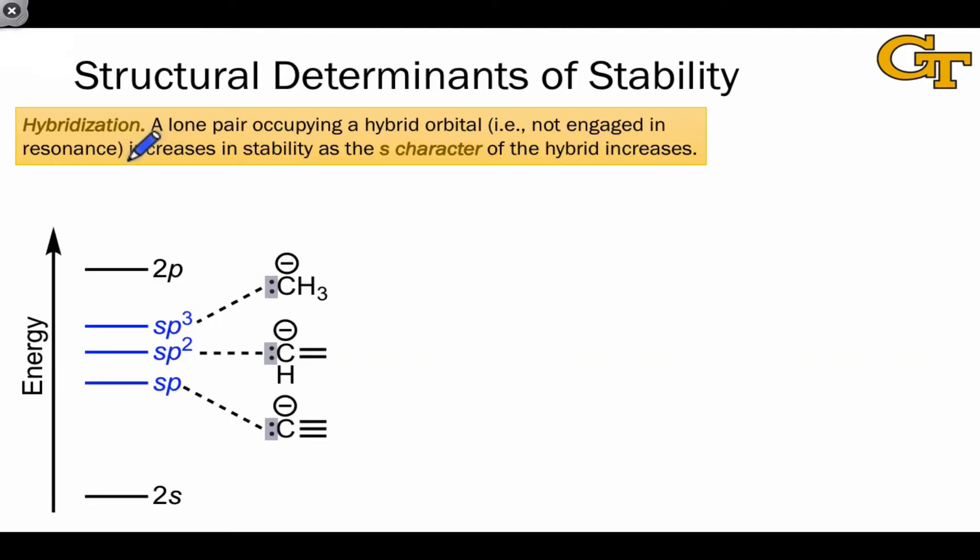A pair of electrons occupying a hybrid increases in stability as the s character or %s of the hybrid increases. In previous discussions of NBO theory, recall that we identified a hybrid with its %s character, taking the total composition and looking at what percentage of that is due to the s orbital.